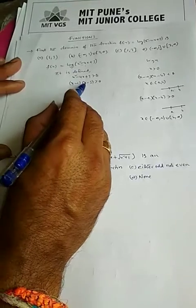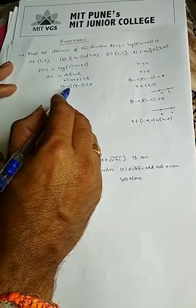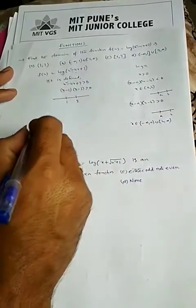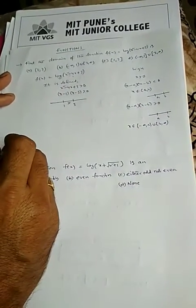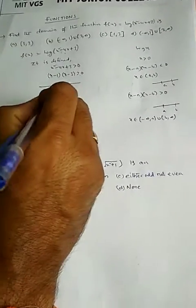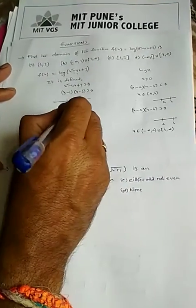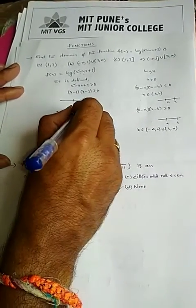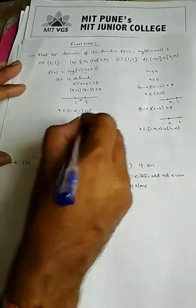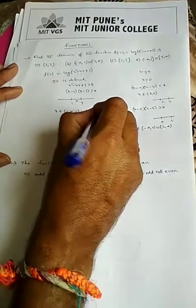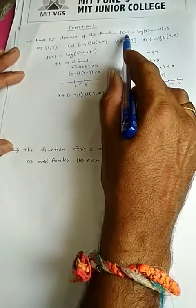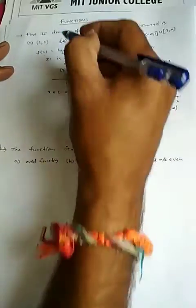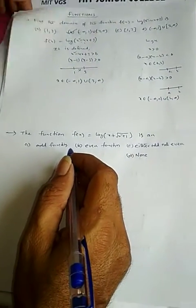Since our expression is (x - 1)(x - 3) > 0, x does not lie between 1 and 3. Therefore x lies in (-∞, 1) ∪ (3, ∞), which is the domain of f(x). Option B is the right answer. Now here is one more question.